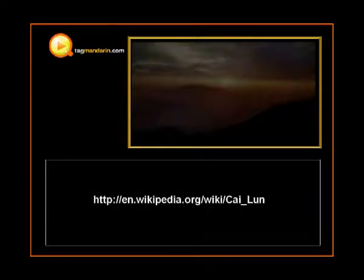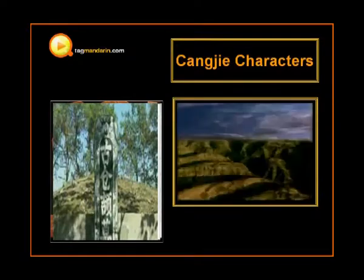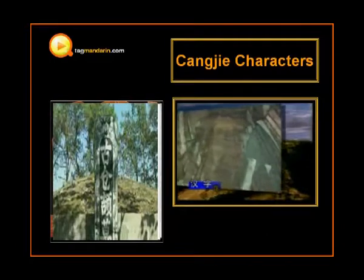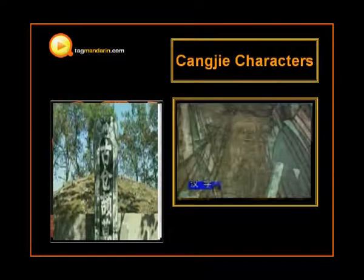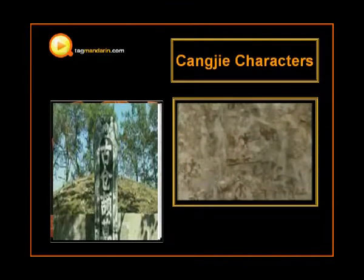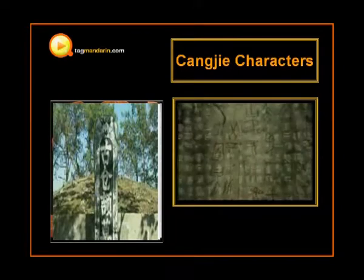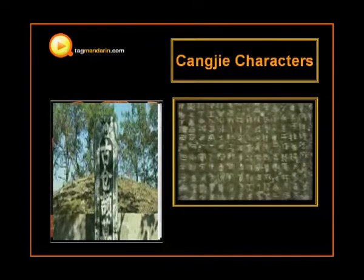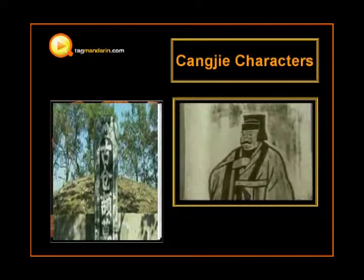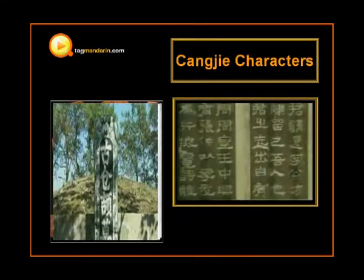We have talked about a great person who made paper. Then we have to introduce a person named Cang Jie who created the Chinese characters. Cang Jie is a legendary figure in ancient China, about 2615 BC, claimed to be an official historian of the Yellow Emperor and the inventor of Chinese characters.